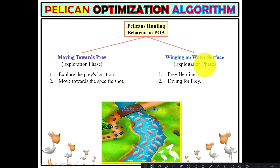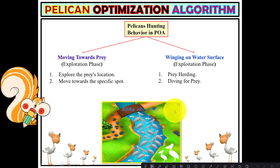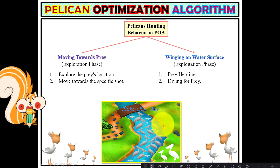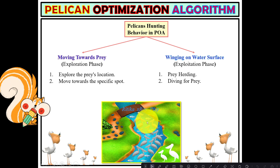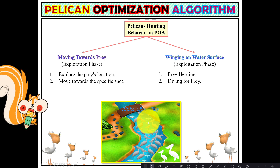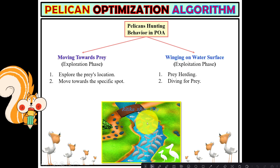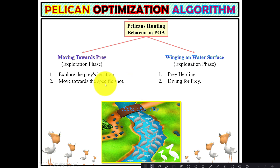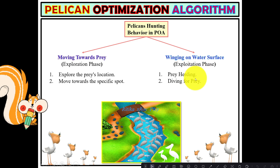In the exploitation phase, pelicans hunt the prey. When they spot the prey location, they reach the water surface and use their wings and feet to create a barrier around the fish, preventing escape. Once the target is locked up, pelicans take turns diving to scoop up fish with their bills and hold large amounts in their expandable throat pouches until full.